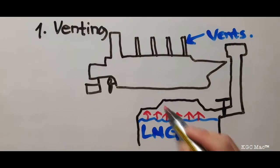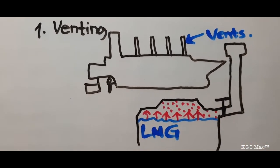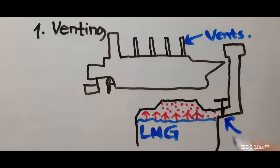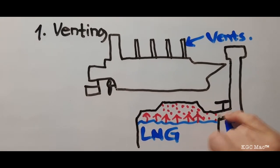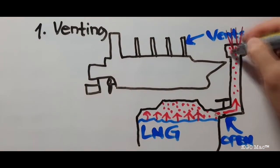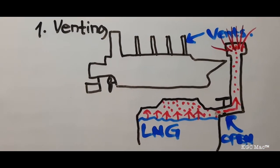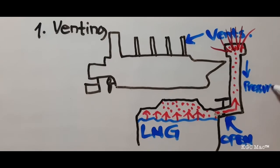When tank pressure rises, we simply direct the flow of the built-up pressure towards the vent mast and manually open the valve to release the built-up pressure, resulting in lowering of the tank pressure.